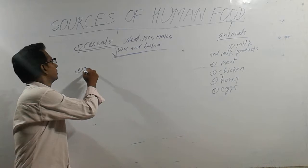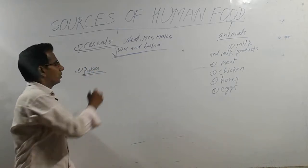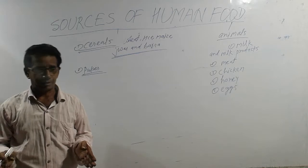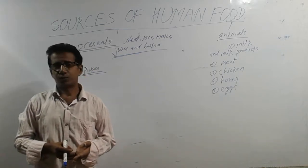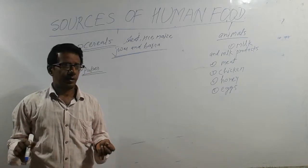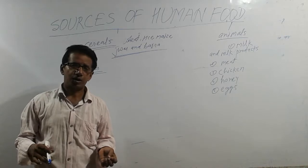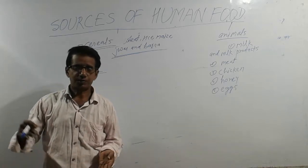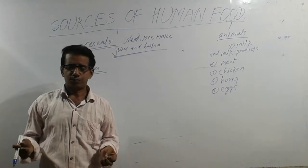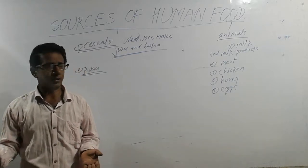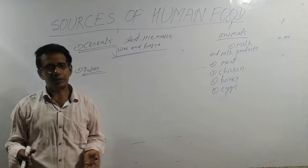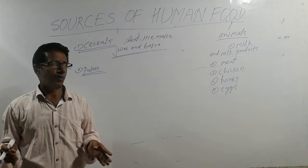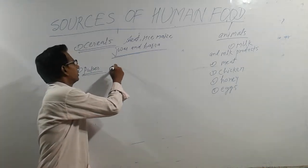Pulses are very important for us because pulses are rich in proteins. You already know the functions of proteins: proteins make new cells, repair damaged cells and tissues of the body, and help in growing. Growing children need more proteins than adults, so proteins are very very important to us. Pulses are the main sources of proteins.